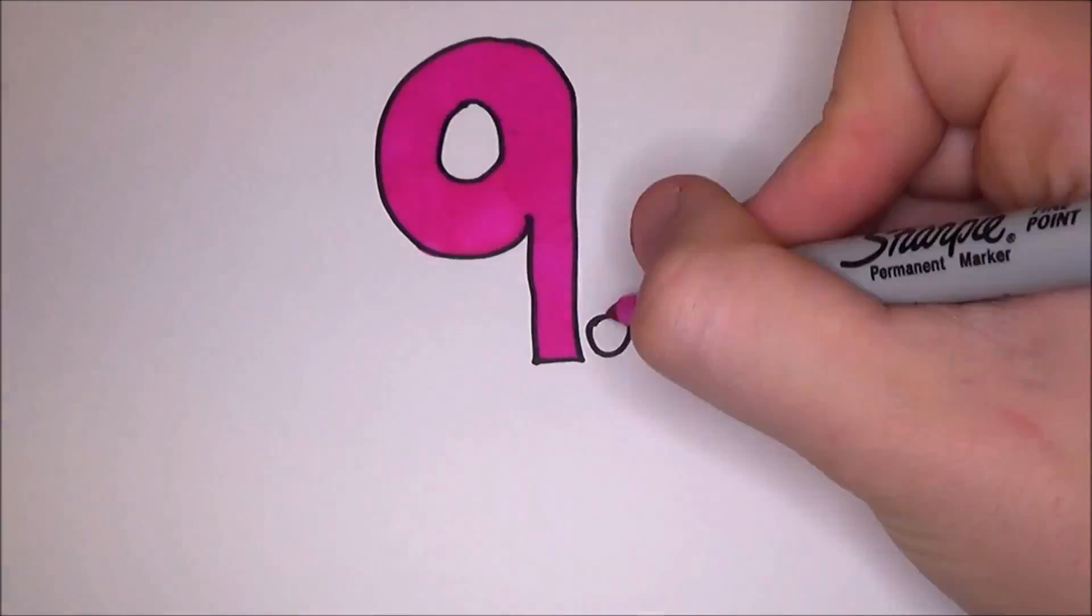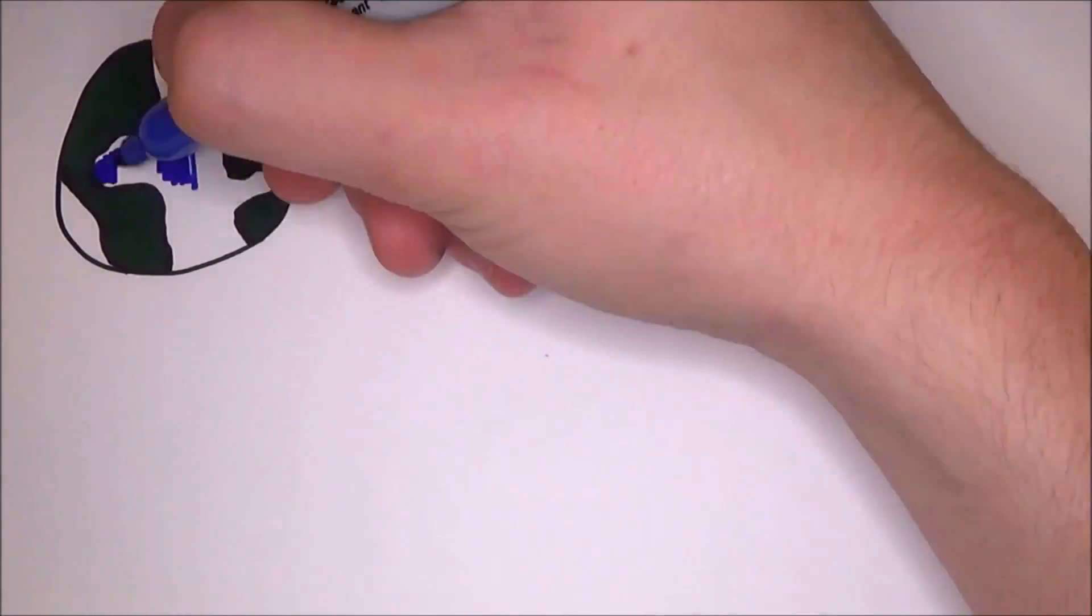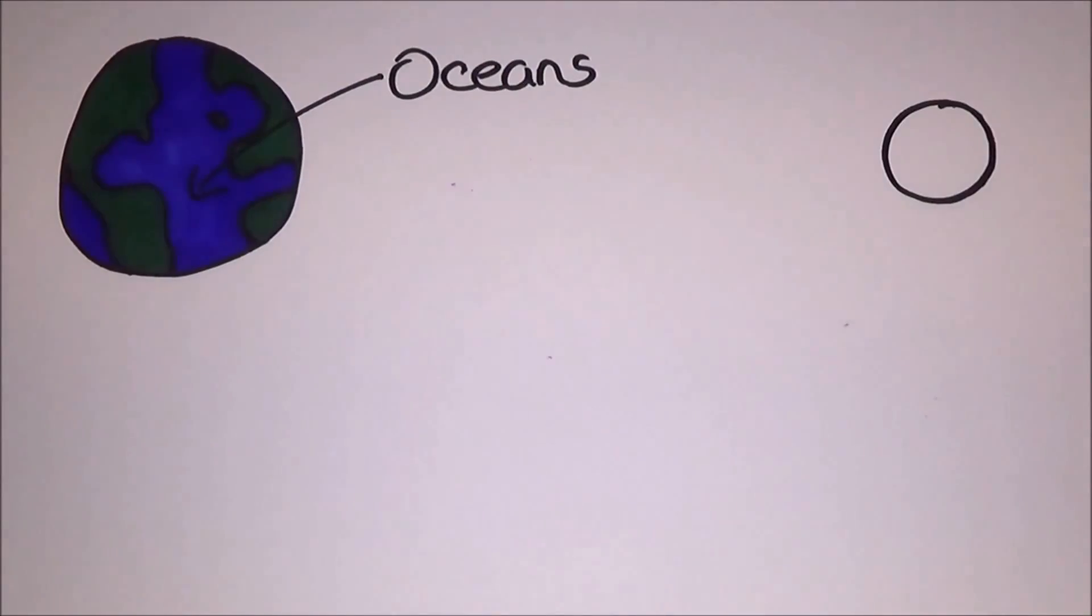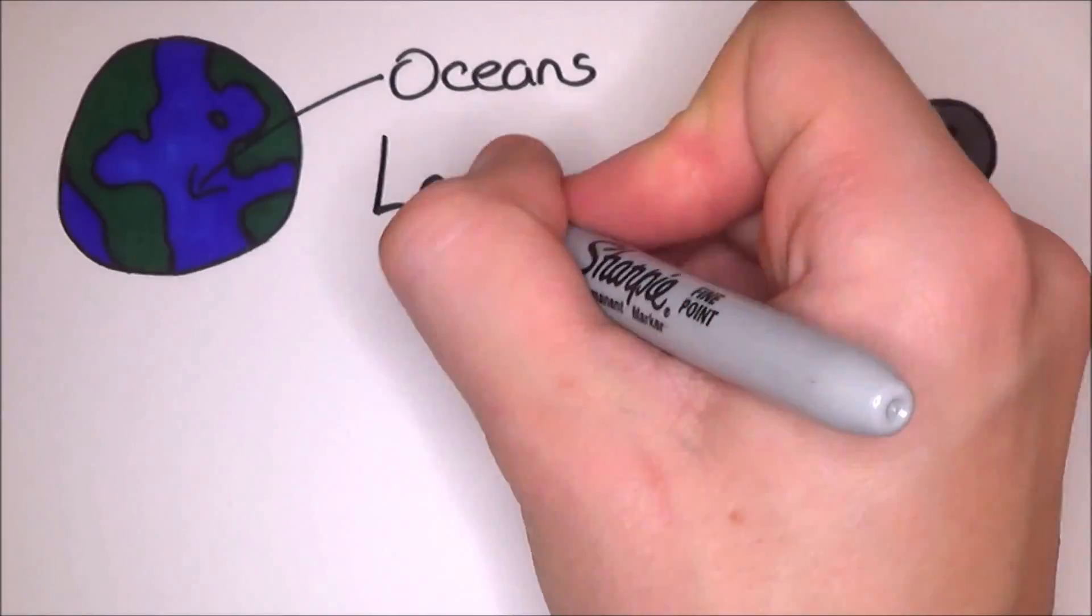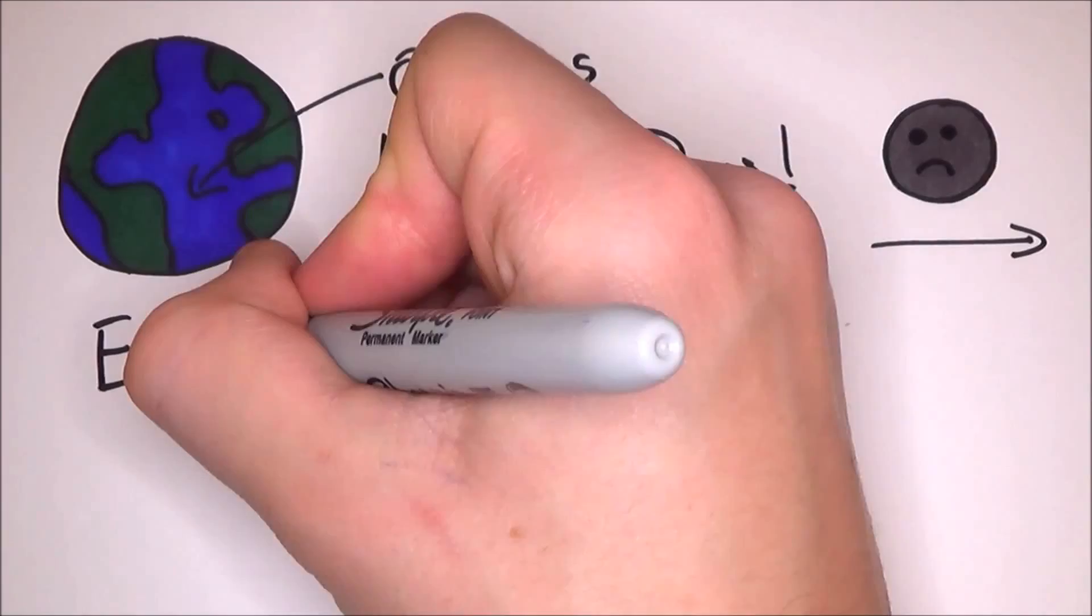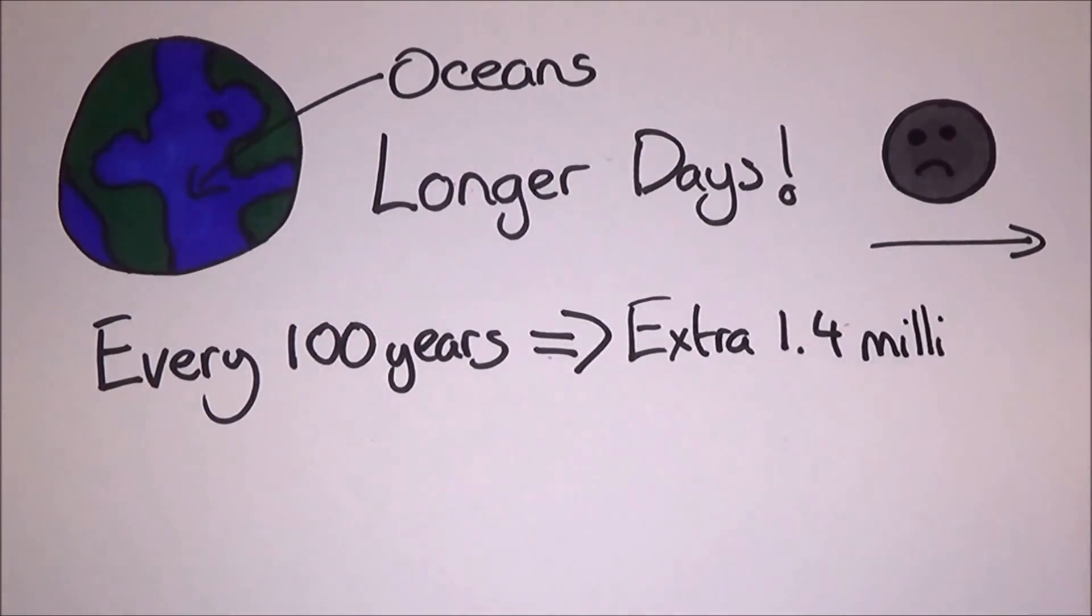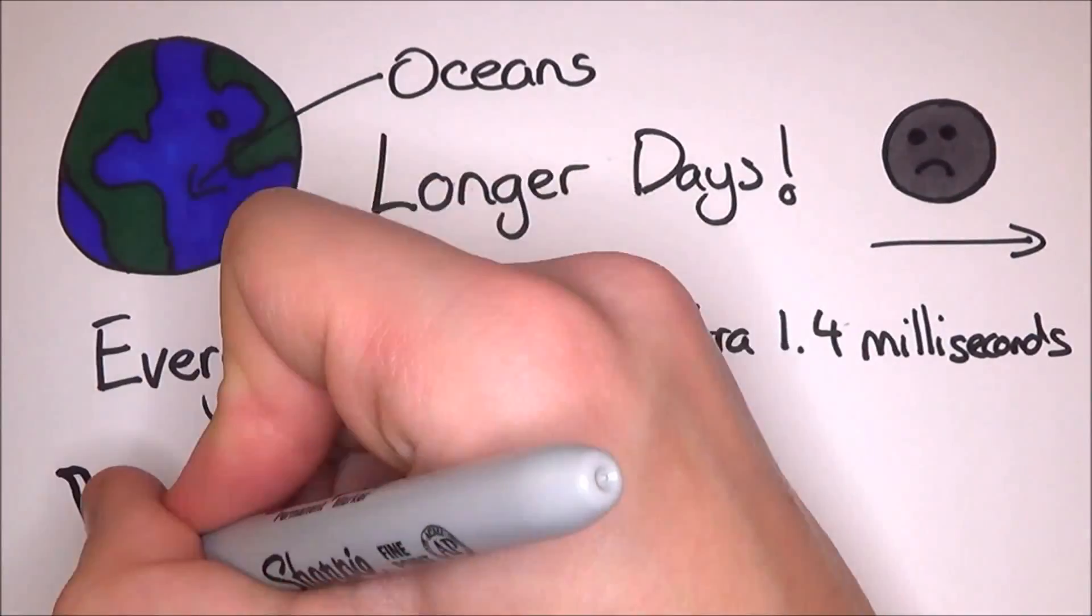Number 9. Ever wanted more hours in a day? Due to the oceans, the Earth's rotation is slowing down. This has had some bad effects like the moon moving further away from the Earth. But more importantly, a slower rotation means a longer day. Every 100 years, it slows down enough to add 1.4 milliseconds onto the day.